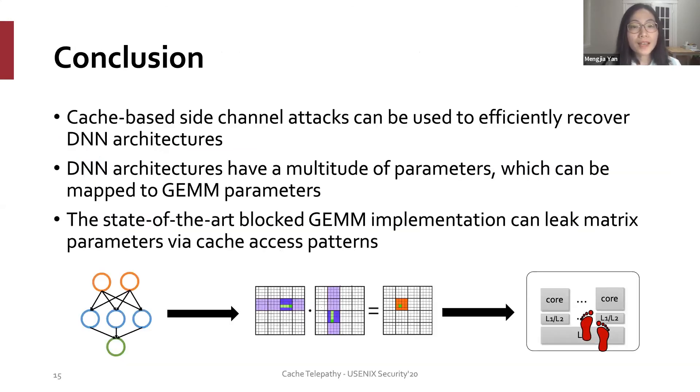To conclude, the takeaway messages from this paper is that cache-based side channel attacks can be used to efficiently recover DNN architectures. DNN architectures, even though they have a multitude of parameters, these parameters are all mapped to the GEMM parameters. And the state-of-the-art blocked GEMM implementation can leak matrix parameters via cache access patterns.